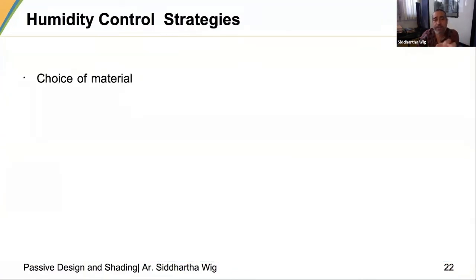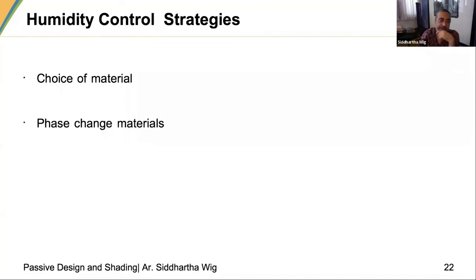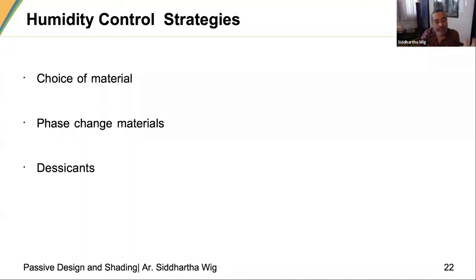For humidity control strategies, the choice of material matters — we have often used mud or a variation of mud with very little cement on walls to allow it to breathe. You can have phase change materials that actually change their phase depending on temperature and release that heat when they change back. You can also have desiccants, which are very popular, or a desiccant wheel — though that uses some energy and would come under the category of a hybrid system.